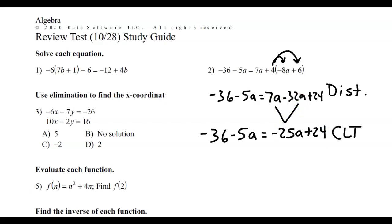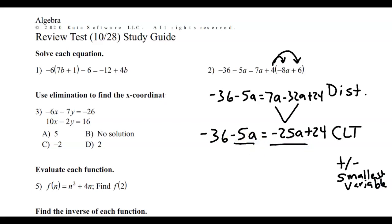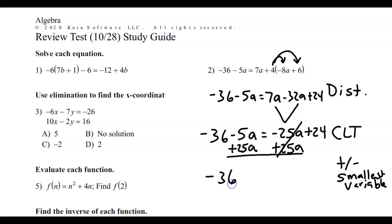Now the next thing we do after we combine our like terms is, if you have a variable on both sides of the equation, you're going to either add or subtract the smallest variable term. So in this case, what's smaller — negative 5 or negative 25? Negative 25 is smaller because it's more negative. So I want to get rid of that negative 25, so I'm going to add it. It really doesn't matter which one you move — you'll still get the right answer. But I prefer to move the smaller one, because by doing that you can avoid having negatives. So by adding 25 on both sides, we end up with this.